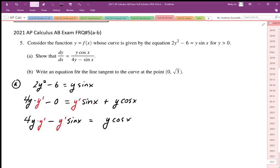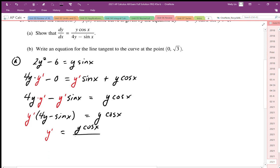Factoring out the y prime we end up with y prime bracket, and then we end up with 4y minus sine x and that's going to be the denominator of that term, so we get y cosine x. Our final answer we end up with y prime equals y cosine x all over 4y minus sine of x.